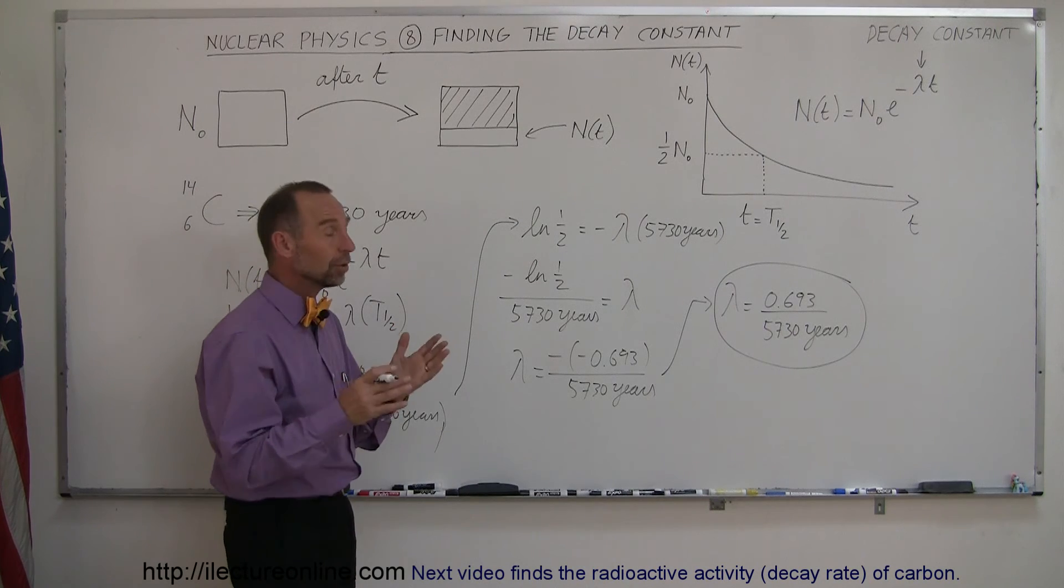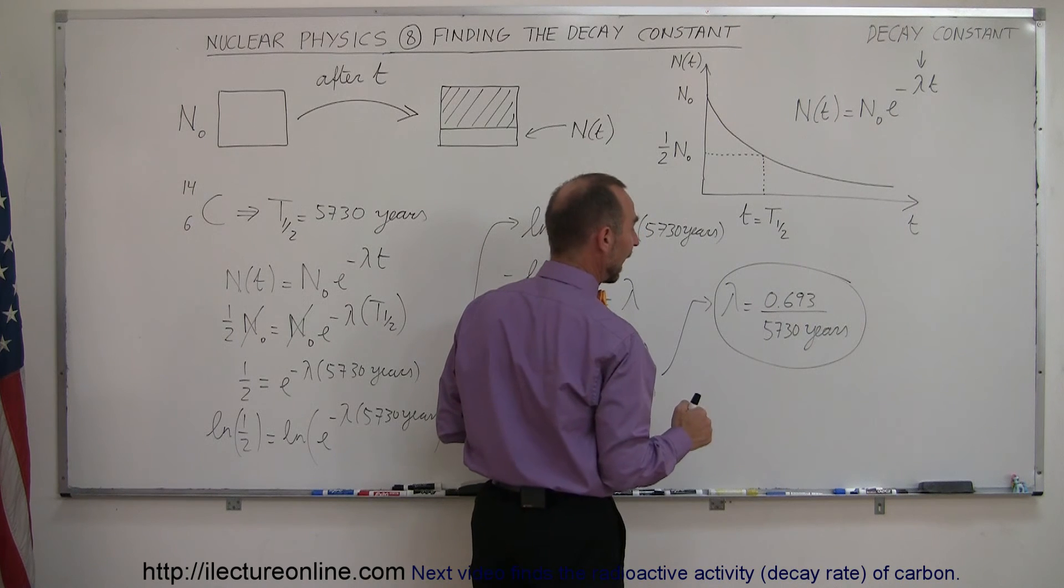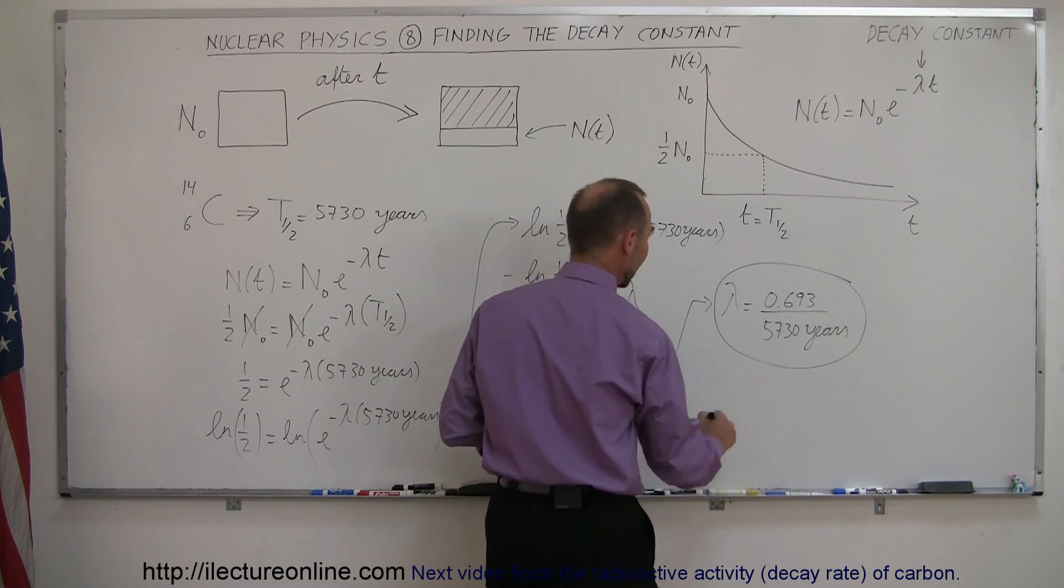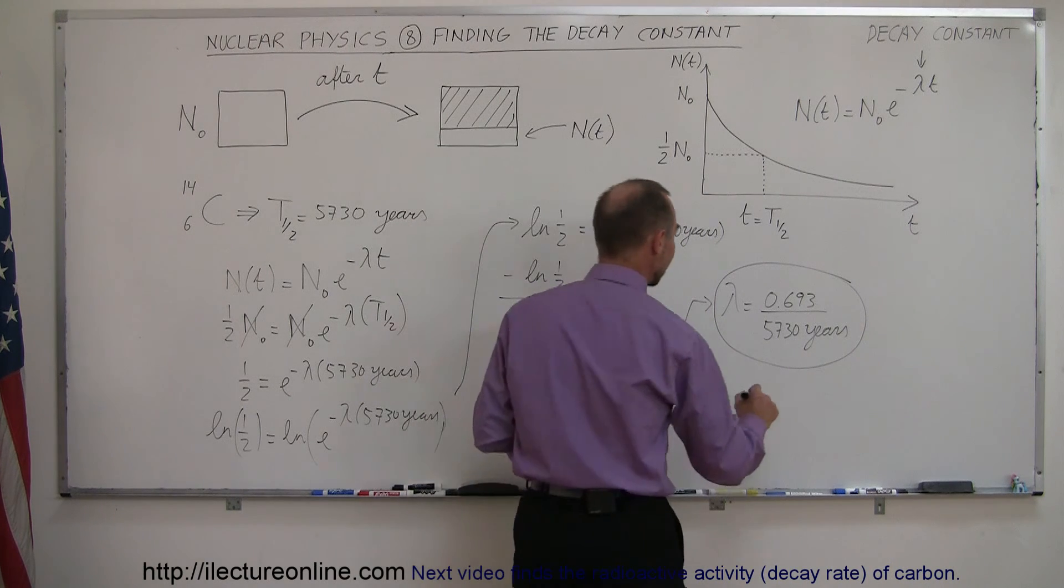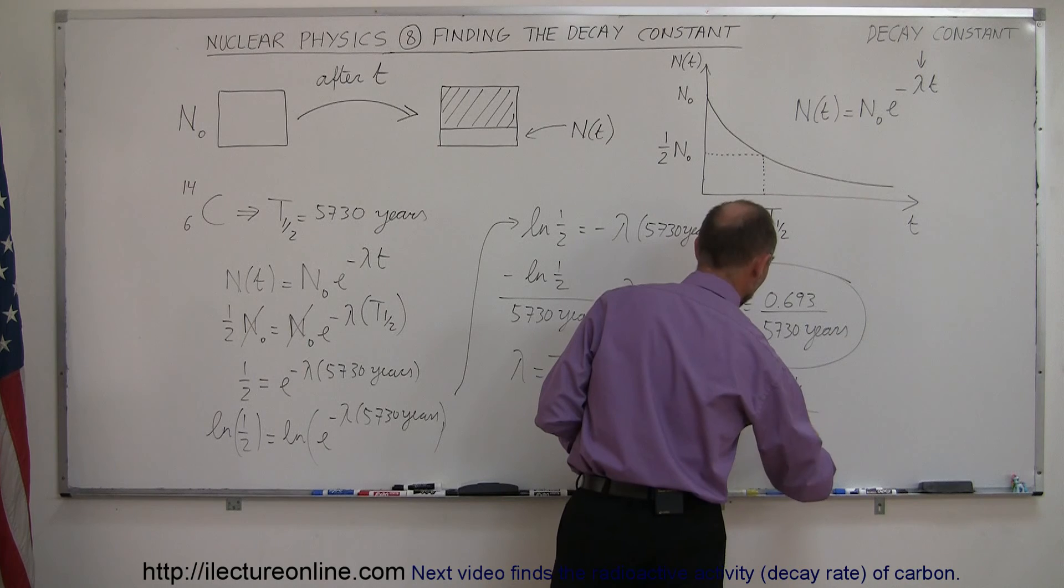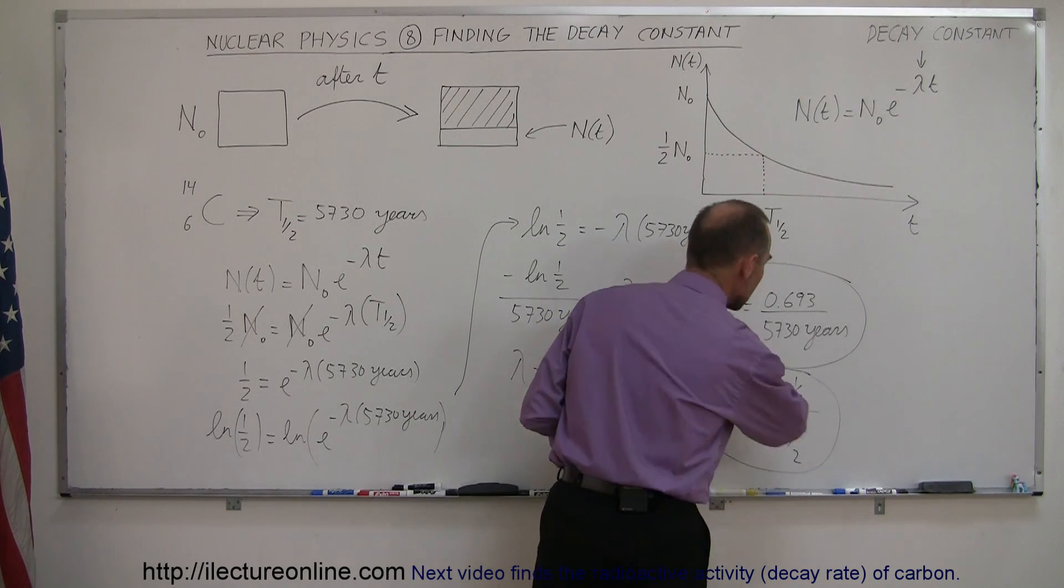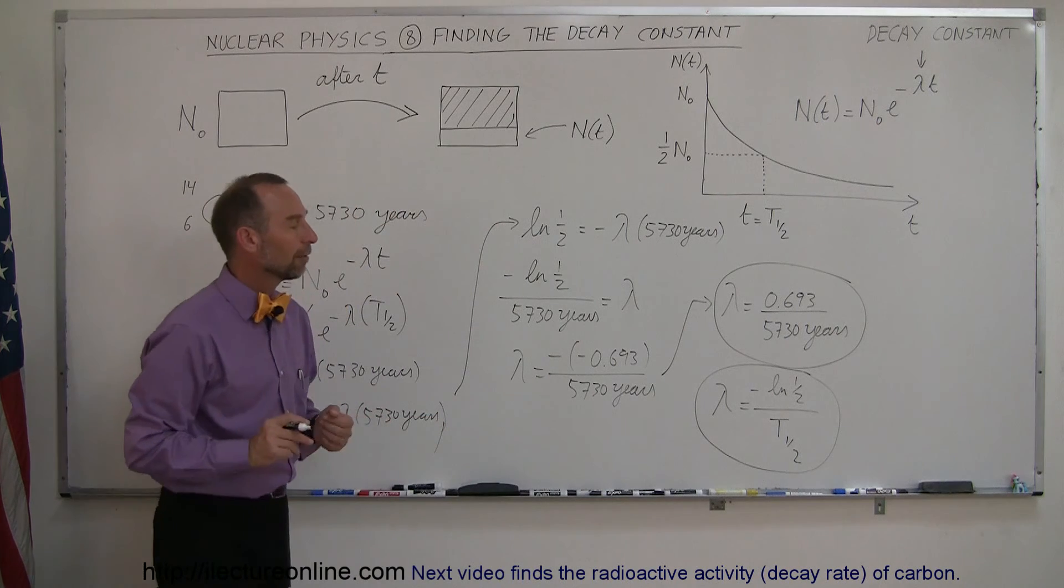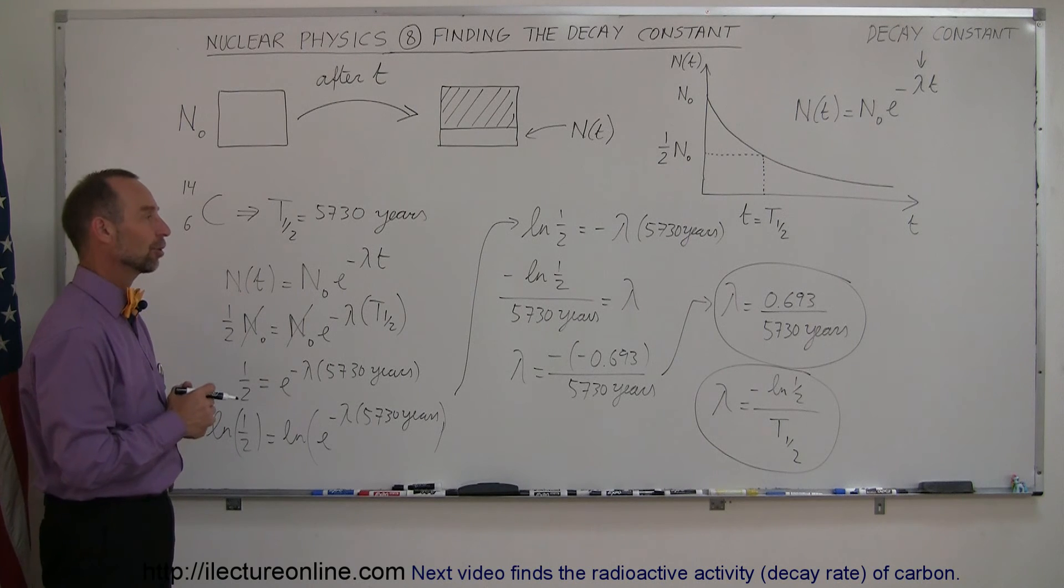Now, in general then, of course, realizing that this is simply the negative of the natural log of one-half, and this is simply the half-life, in general you can say that the decay constant can still be found by taking the negative of the natural log of one-half and dividing it by the half-life of the radioactive material. And that's how you find the decay constant for any material.